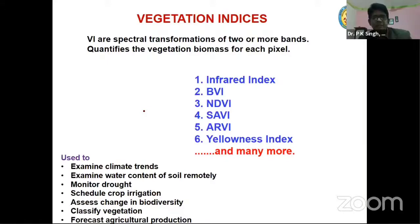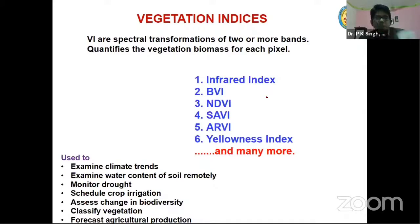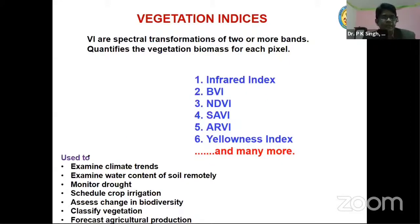These are called vegetation indices because they are designed to extract more information from the vegetation. You will be astonished to know there are more than 100 such vegetation indices developed by different researchers. I will discuss some of them. The main ones are: infrared index, NDVI, MDVI, SAVI, ARVI, yellowness index, and many more. The fundamentals — how they are prepared, why they are prepared, and what sort of information you can extract — are important to understand.